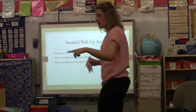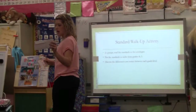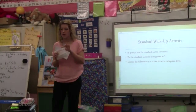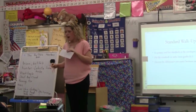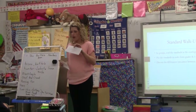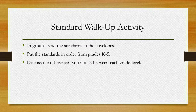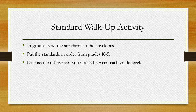At each of your tables you have an envelope, and this is focusing on one standard — the reading literature standard. We have six of them here, each for K through 5, and we are going to ask you to try to put them in order from K to 5. While you're doing that, look for key terms that you notice are different between each grade level, and look for the progression as you go from kindergarten up to fifth grade.